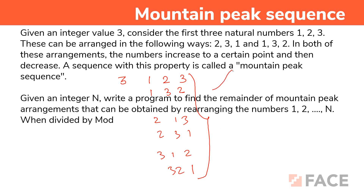How does a mountain look? It increases and then it decreases. When you go for 1, 2, 3 it only increases. For 1, 3, 2: from 1 it increased to 3 and then decreased to 2 — so it is a mountain peak sequence. For 2, 1, 3: from 2 it decreased, so it does not look like a mountain. For 2, 3, 1: from 2 it increased to 3 and decreased to 1 — so it looks like a mountain peak sequence. For 3, 1, 2 and 3, 2, 1 those do not qualify. So there are two numbers which look like a mountain peak sequence, and my output value is 2.